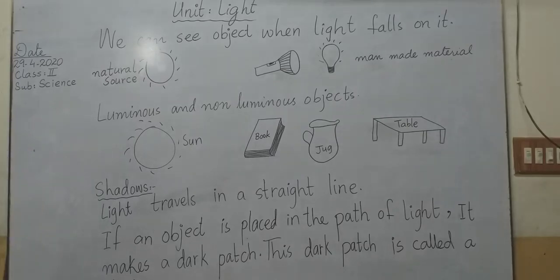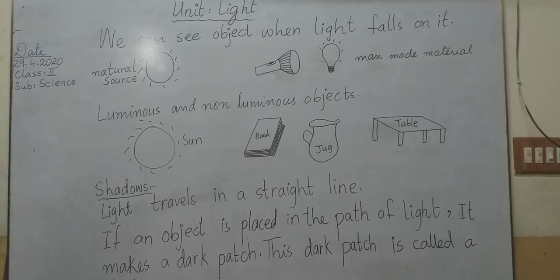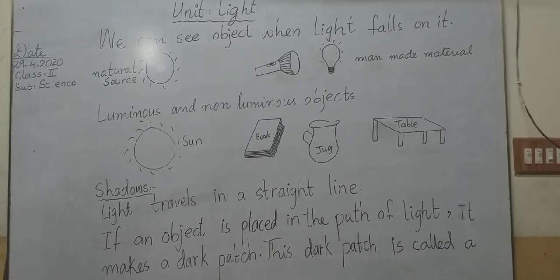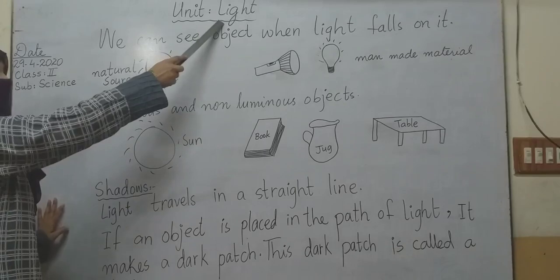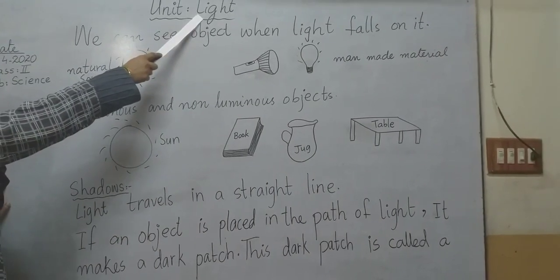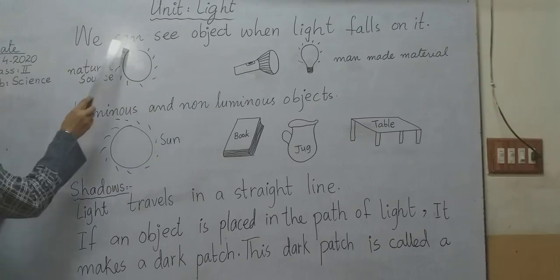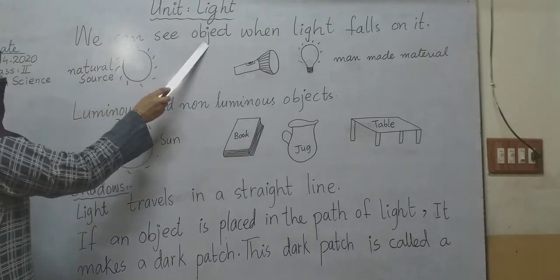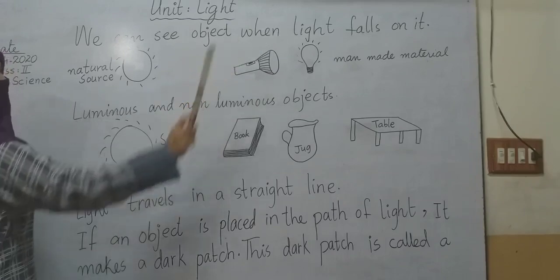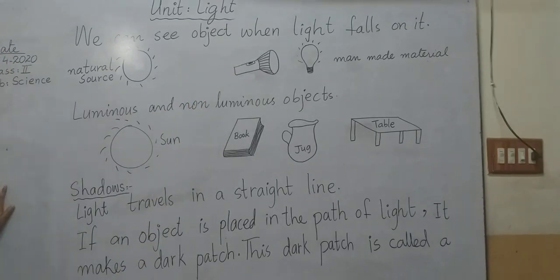Bismillahirrahmanirrahim and Assalamualaikum. Students, today I am here to explain the science topic of light. Do you know how do we see things? We can see objects with the help of light. We can see objects easily when light falls on them. Otherwise, if there is no light, then we cannot see objects.